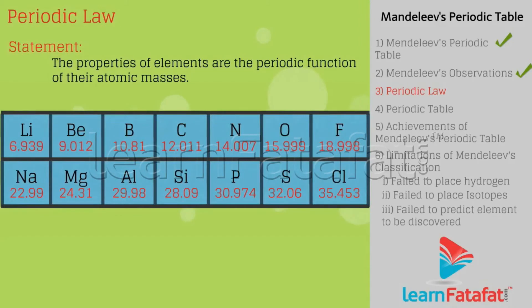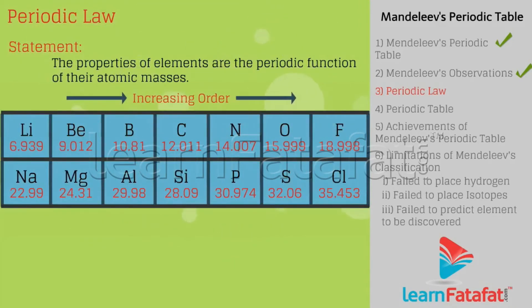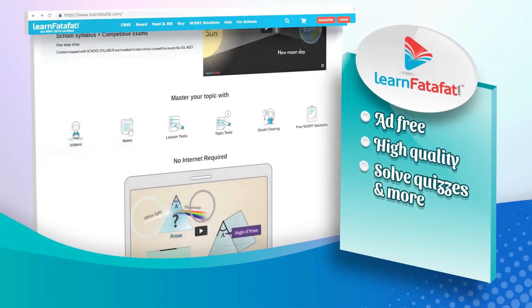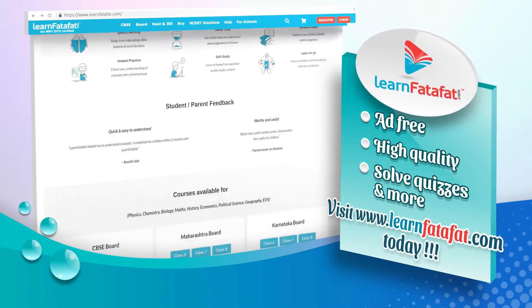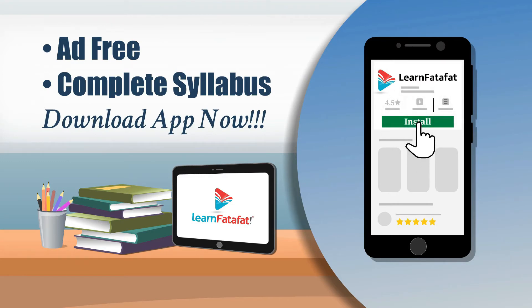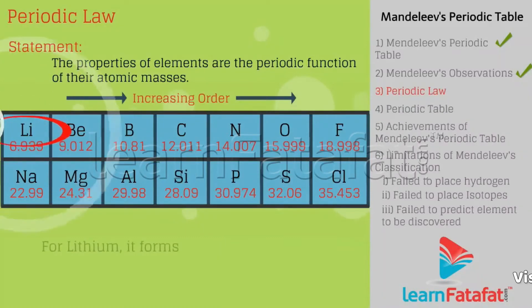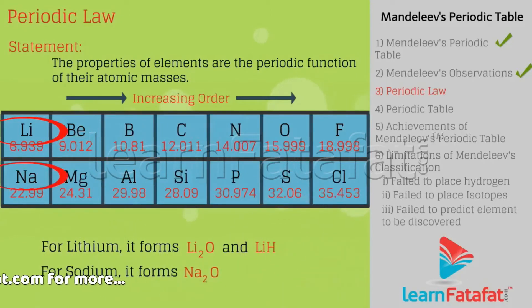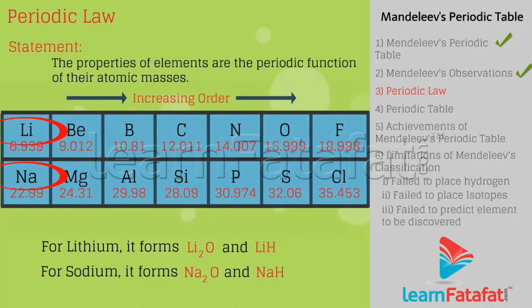Periodic law: the properties of elements are the periodic function of their atomic masses. That is, when elements are arranged horizontally in order of increasing atomic masses, then a certain set of properties get repeated periodically. For example, Li is a metal, it forms Li2O and LiH. Similarly, sodium is a metal, it forms Na2O and NaH. Thus, properties get repeated periodically.